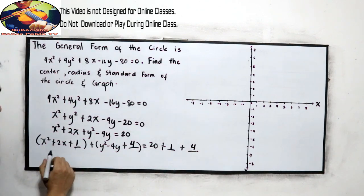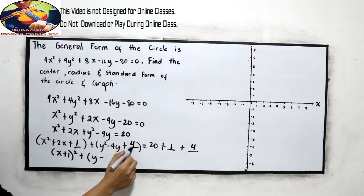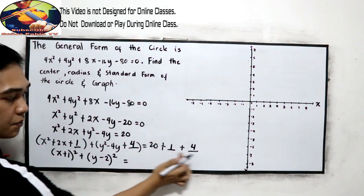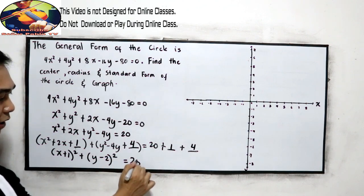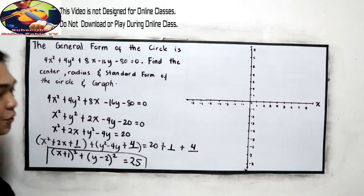Now, write it into a square of a binomial. So, x, sign of the middle term positive, square root of 1, it's 1, square. Plus y minus square root of 4, that is 2, square equals 25. This is our standard form.